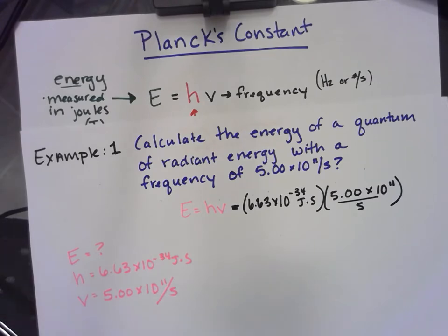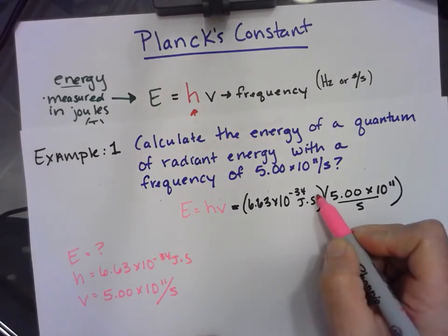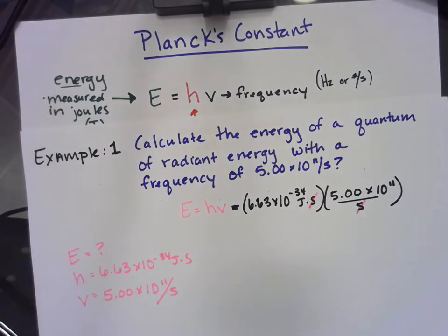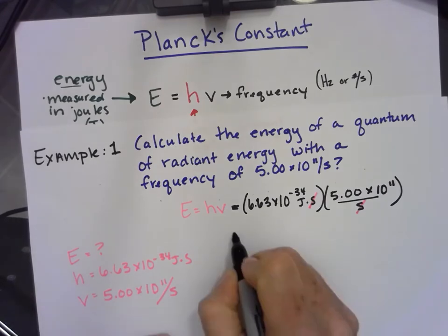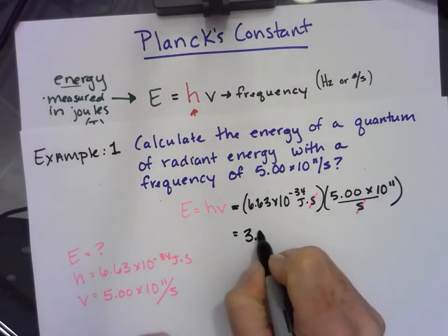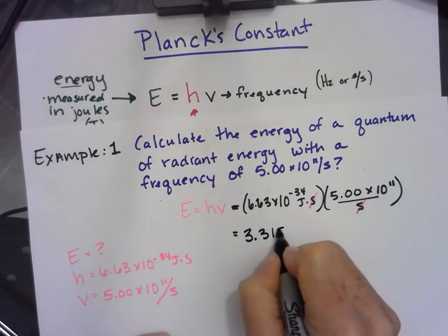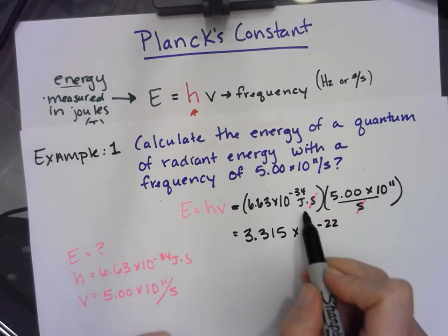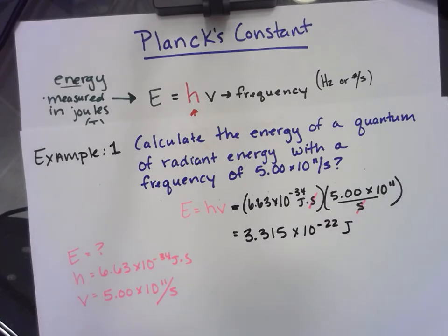Now if we take a look, this second is a numerator and this one is a denominator. So they cancel. When I punch this into the calculator, I get 3.315 times 10 to the negative 22. Joules is the only unit left. So I'm going to write that.